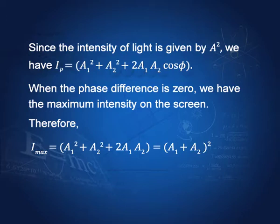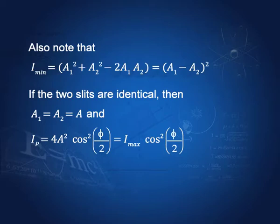When the phase difference φ = 0, the intensity becomes (A1 + A2)², the maximum value. When the phase difference φ = π, cosφ = −1, so the minimum intensity is (A1 − A2)². Thus maximum intensity is (A1 + A2)² and minimum intensity is (A1 − A2)².